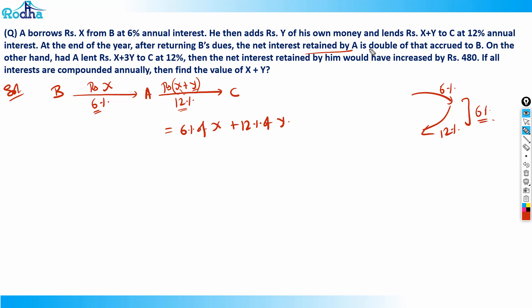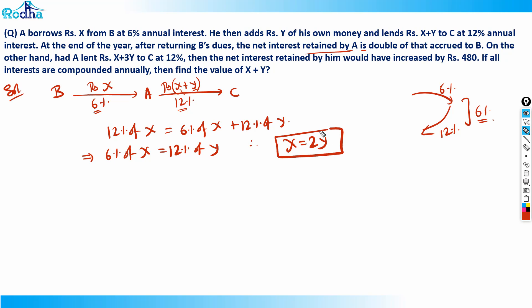The net interest retained by A is double of that accrued to B. To B, A paid 6 percent of X, so double of that is 12 percent of X. The money retained by A equals 6 percent of X plus 12 percent of Y. Setting this equal to 12 percent of X gives us 6 percent of X equals 12 percent of Y, which means X equals 2Y.